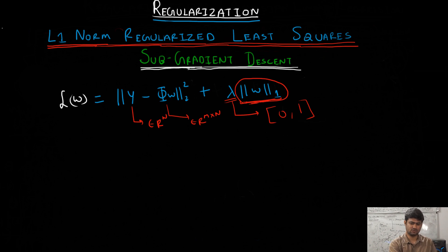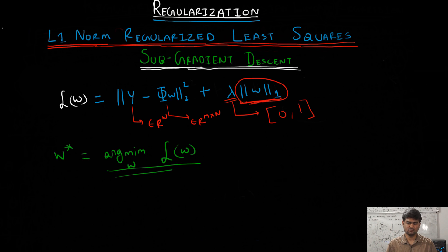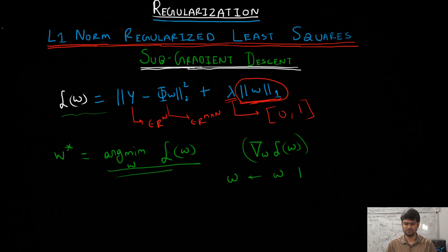To compute W star, the MAP estimate, we need W star equals argmin over W of L of W. The goal is to minimize this loss function. As we saw earlier for linear regression and L2 norm regularized least squares, we were able to compute the derivative of the loss function with respect to W, and update the parameter as W goes to W minus alpha times the gradient of the loss function.